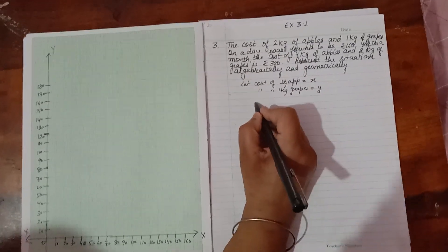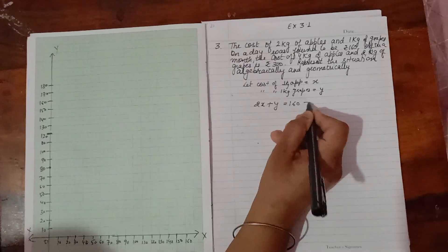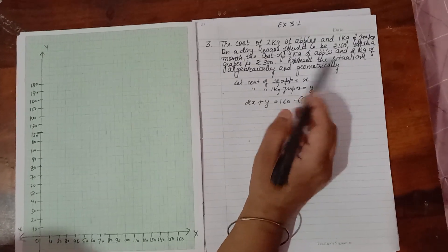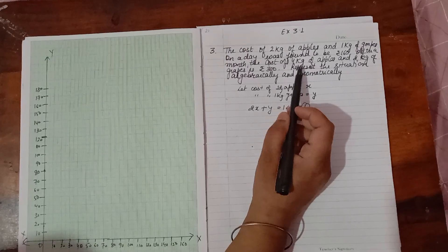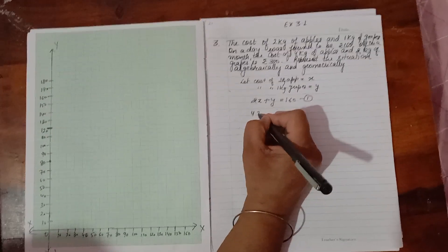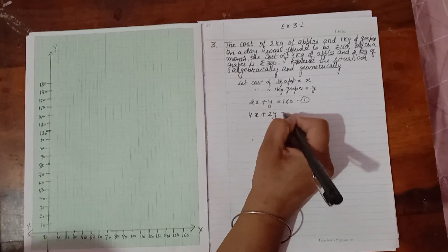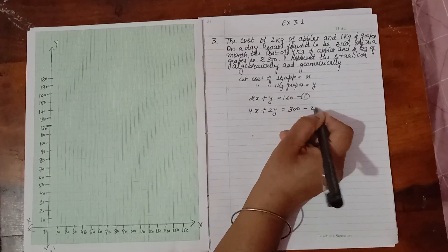Now according to the question, 2X plus Y equals 160 is the first equation. The second equation is after a month, the cost of 4 kg of apples and 2 kg of grapes, so 4X plus 2Y equals 300.